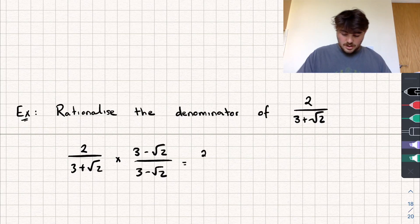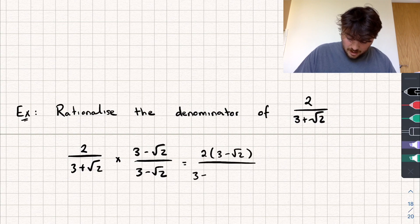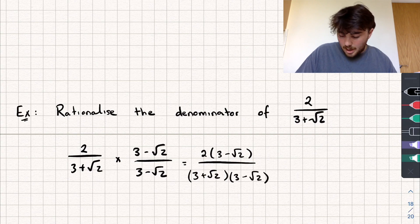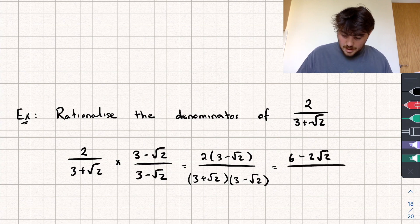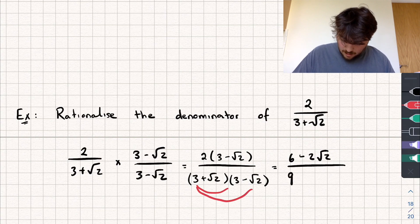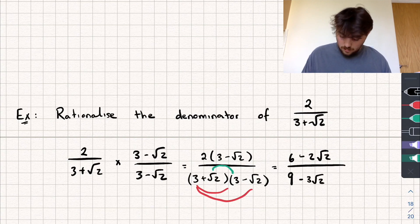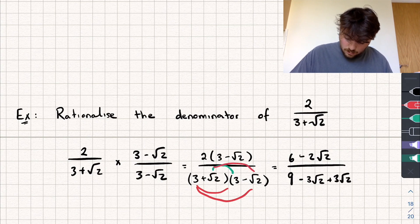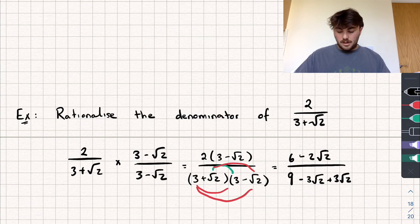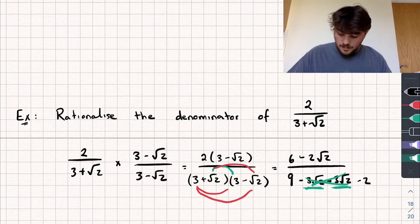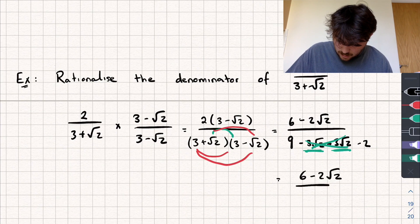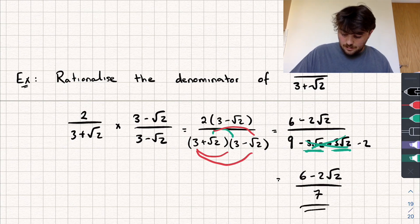Let's work it out. On the numerator we have 2 lots of (3 minus √2), which expands to 6 minus 2√2. On the denominator we have (3 plus √2) multiplied by (3 minus √2): 3×3=9, then 3×(−√2)=−3√2, then √2×3=+3√2, then √2×(−√2)=−2. The −3√2 and +3√2 cancel out, so the denominator simplifies to 9−2=7. Our final answer is (6 minus 2√2) over 7, and we've rationalised the denominator.